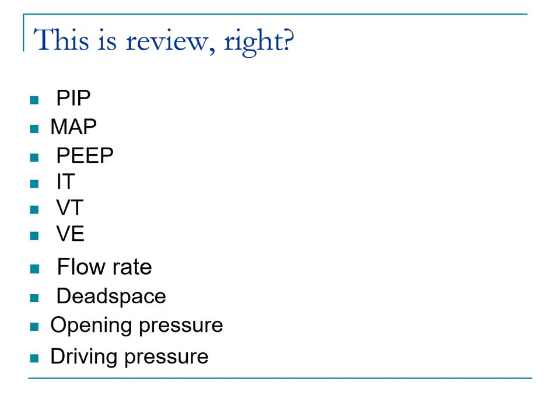When the care team says they want a PIP of 20, they usually mean a total pressure of 20. You need to know your ventilator — does it give you total pressure or change of pressure when you set the PIP? If they order 20 over 5, make sure that's a total pressure of 20, not 25 over 5. We try to keep PIPs and total pressures below 30 if we can to avoid damage or hypoventilation.